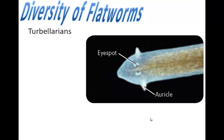Discussing the diversity of flatworms, the first group we'll look at is Turbellaria. These live in marine or freshwater environments. They vary in size, color, and body shape. We see eye spots that can detect the presence or absence of light. Along the sides are the auricles on the anterior part of the worm that are sensitive to chemicals. They may move their head back and forth to detect chemical stimuli coming from food.